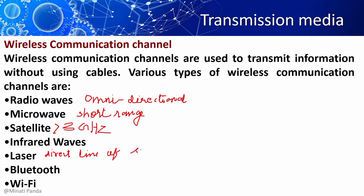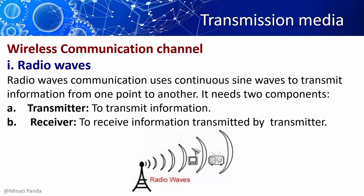In Bluetooth technology, data transmission occurs through ultra high frequency and short wavelength radio waves. Now we will discuss radio waves in detail. Radio wave communication uses continuous sine waves to transmit information from sender to receiver. It needs two components: the first is a transmitter and the second is a receiver. The transmitter is used to transmit information and the receiver is used to receive information transmitted by the transmitter.